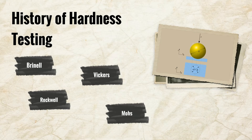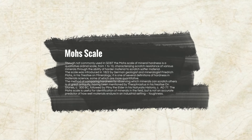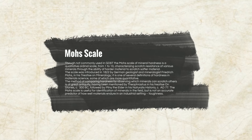Though not really a surface hardness test in the engineering sense, the Mohs method is worth noting. The Mohs scale of mineral hardness is a qualitative ordinal scale from 1 to 10, characterizing scratch resistance of various minerals through the ability of harder material to scratch softer material. The scale was introduced in 1822 by German geologist and mineralogist Friedrich Mohs in his Treatise on Mineralogy. The concept is of great antiquity, having been mentioned by Theophrastus in his Treatise on Stones in 300 BC, followed by Pliny the Elder in Naturalis Historia in AD 77. The Mohs scale is used for identification of minerals in the field but is not an accurate predictor of how well materials endure in an industrial setting.